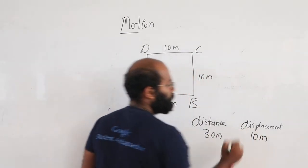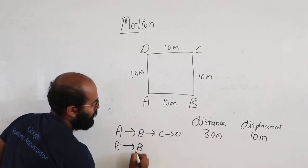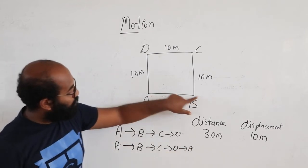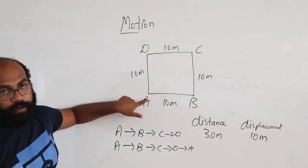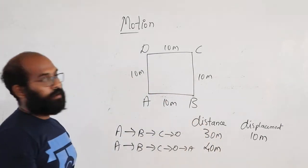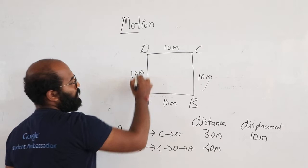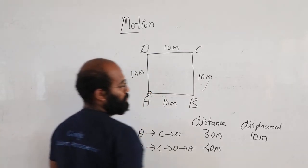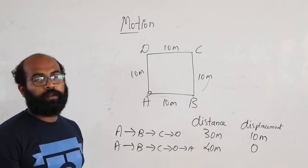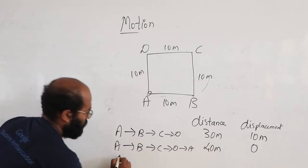Now suppose I go from A to B, then C, then D, and finally back to A — completing the full loop. The total distance is 40 meters. But since I come back to the initial point, the initial point and final point are the same, so the displacement is zero.